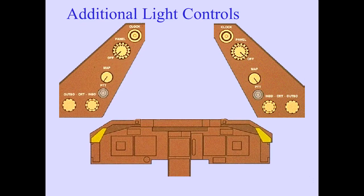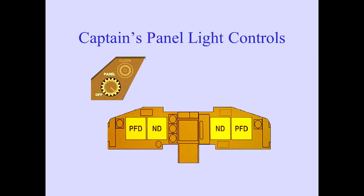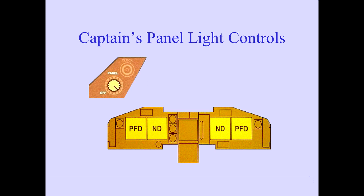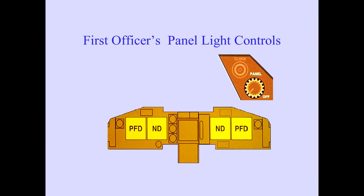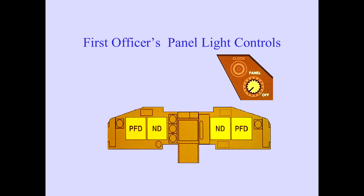Additional light controls are located on the glare shield. The outer portion of the captain's panel control regulates the variable intensity of the lights in the captain's panel and the left side of the center panel. The inner portion regulates the variable intensity of the flood lights over the captain's panel and center panel. The outer portion of the first officer's panel light control regulates the variable intensity of the lights in the first officer's main panel and the right side of the center panel. The inner portion regulates the variable intensity of the flood lights over the first officer's panel.